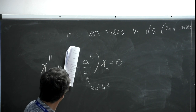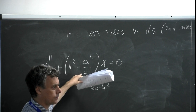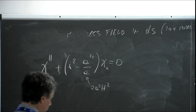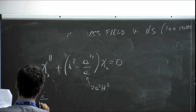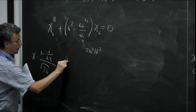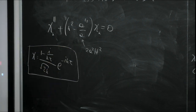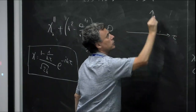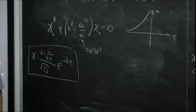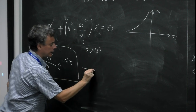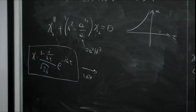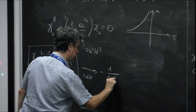The solution which gets the right initial condition is χ = (1 − ikτ)/√(2k) · e^{−ikτ}. Remember: early times means τ goes to minus infinity — the numerator becomes one and you see the usual Minkowski-like normalization. At late times, τ goes to zero, and you get minus i / [√(2k) · k^{3/2} · τ], so the phase vanishes and this term becomes dominant.